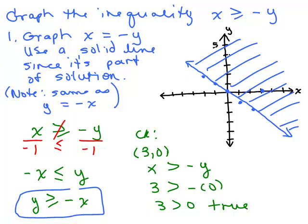You can see that if you had written it as y greater than or equal to negative x, you would also see that it makes sense that it would be shaded above, right? So that's the graph of our inequality, x is greater than or equal to negative y.